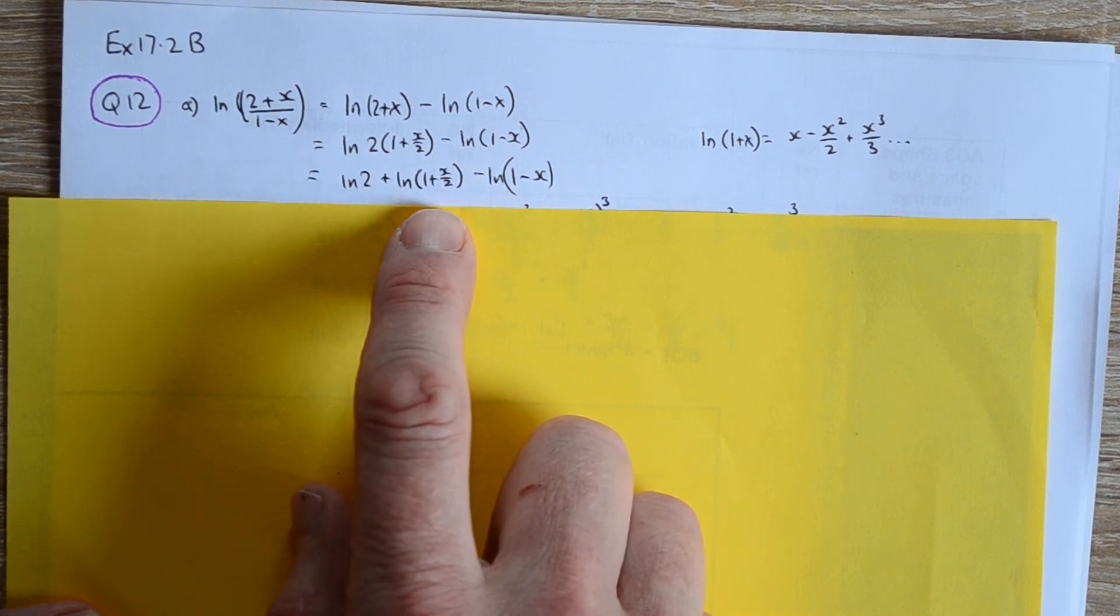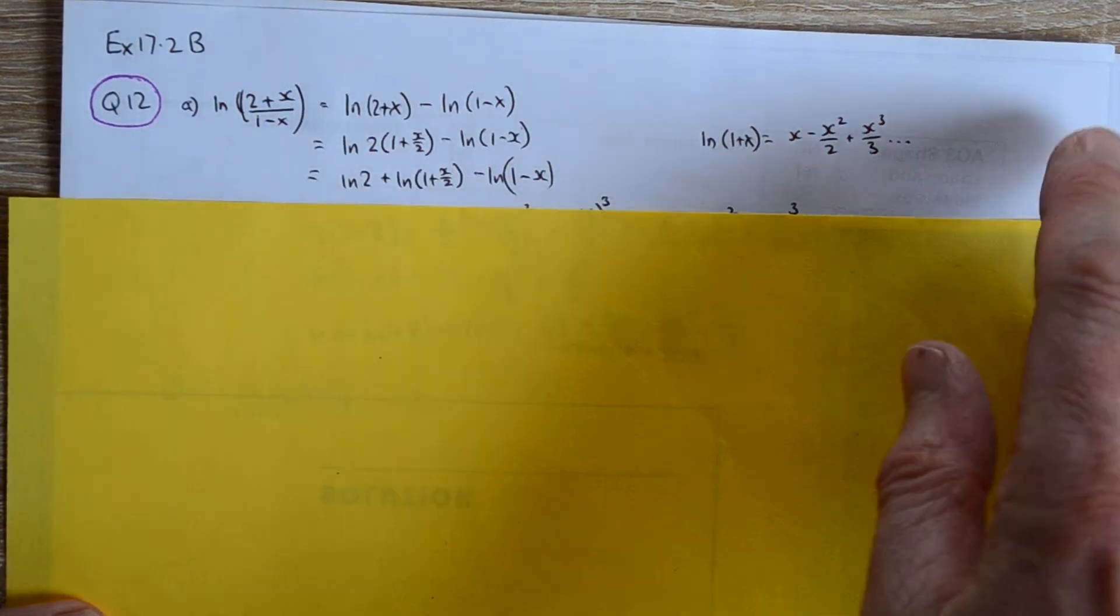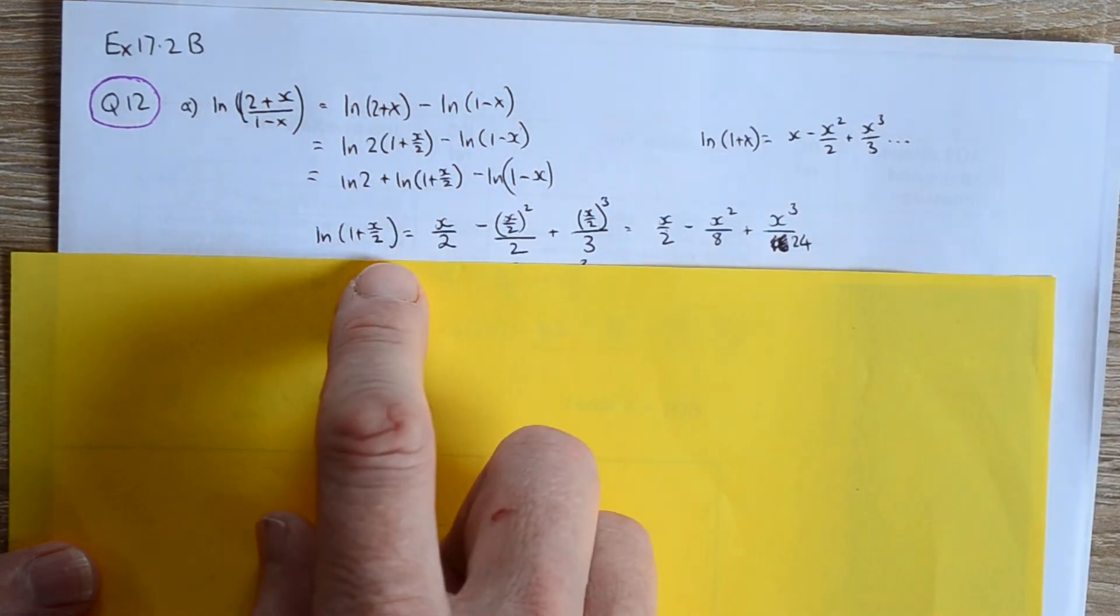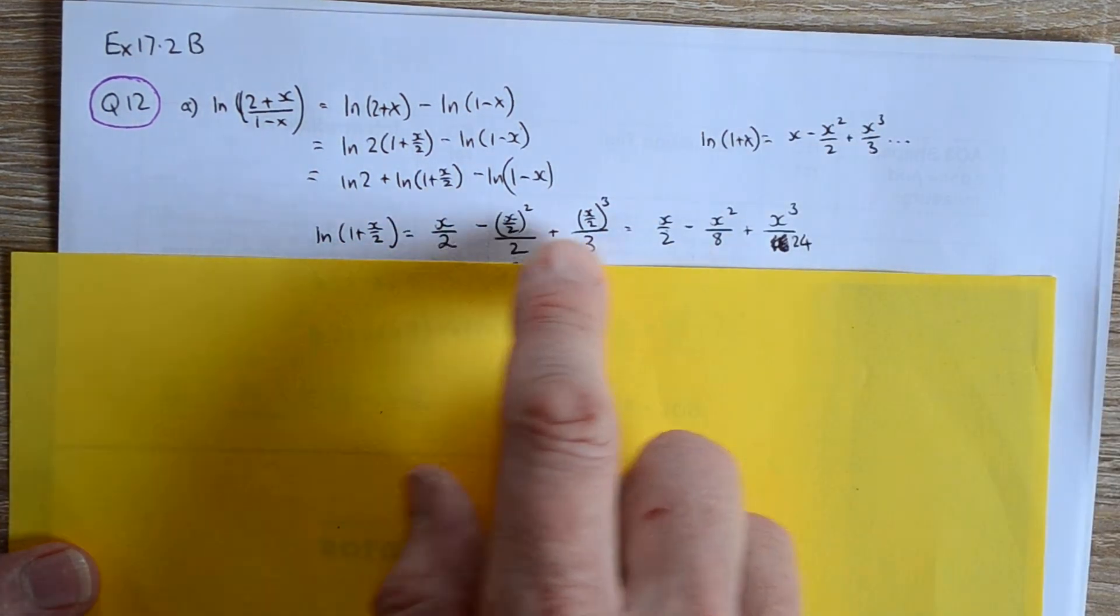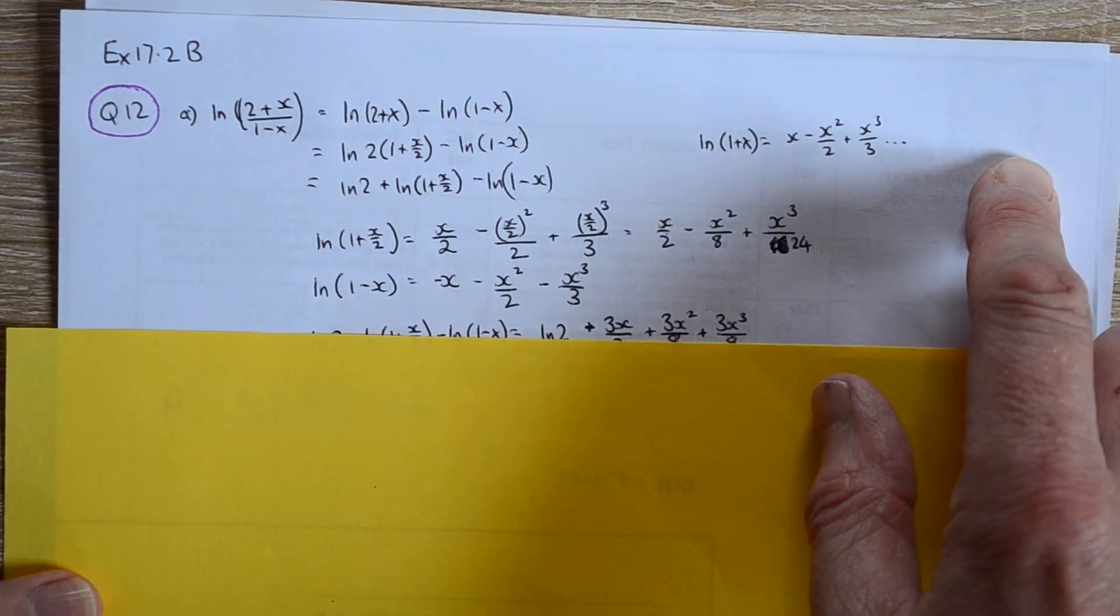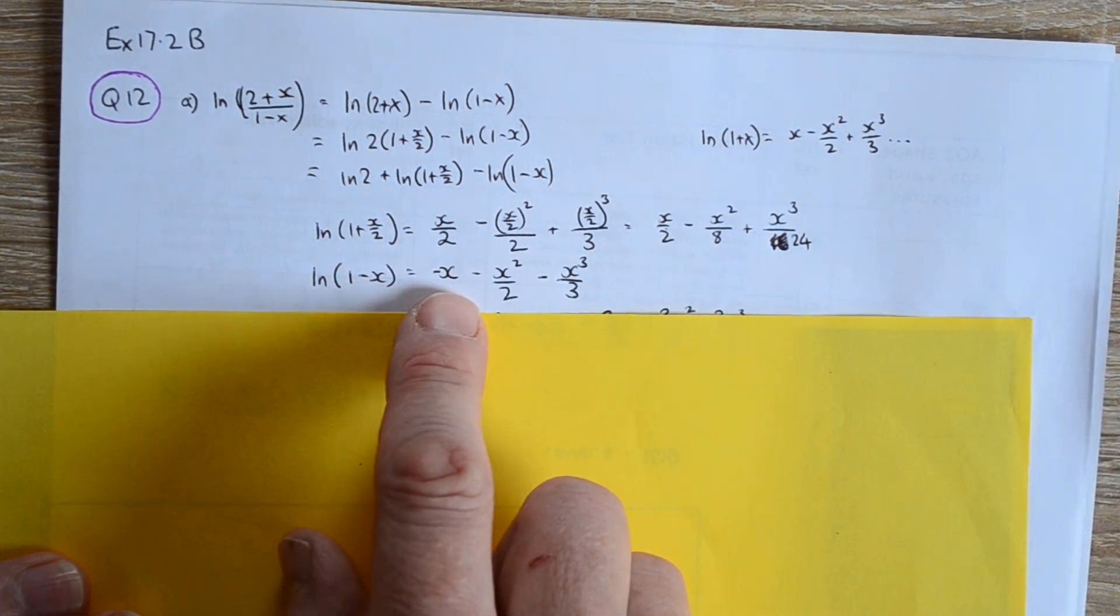Now we're in a position where we can expand these just using the standard formula. So for ln of 1 plus x over 2, sub in x over 2 instead of x, and then simplify and sub in minus x for x.